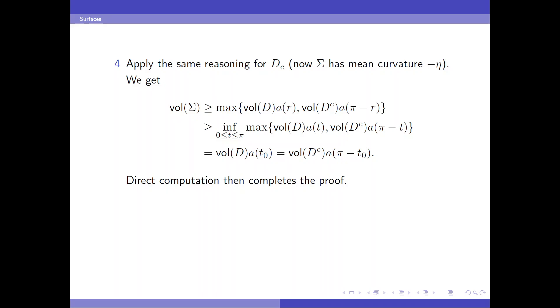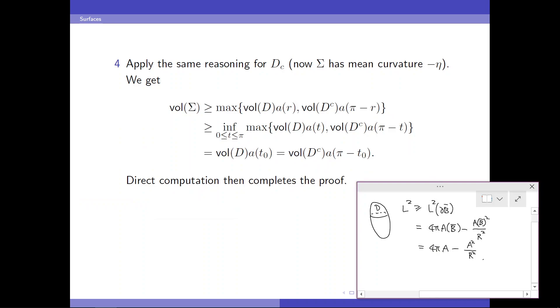And this integral is nothing but the ratio of the volume of spherical cap with radius r over the volume of its boundary in the unit sphere. And we denote this ratio by 1 over A(r). Now, the key is that D is closed, so we can apply the same reasoning for the complement of D. So D here and we apply the complement of it. Now, sigma is again the boundary of the complement of D but with mean curvature negative eta.